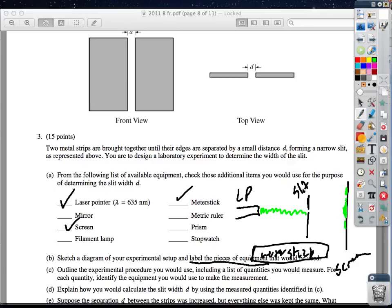Then part C, outlining the experimental procedure you would use, including a list of quantities you would measure for each quantity. Identify the equipment that you would use to make the measurement. So I would say use the meter stick to measure this distance right here, and I would call that L. Right? And then I would use the meter stick to measure this distance, and I would call that X or M or whatever you want to call it.